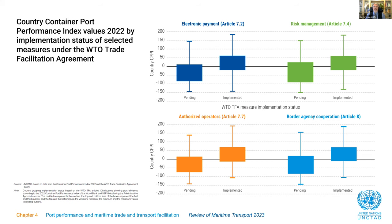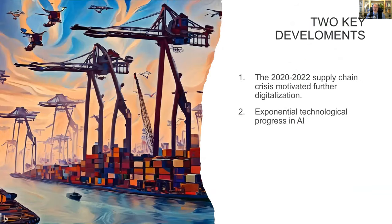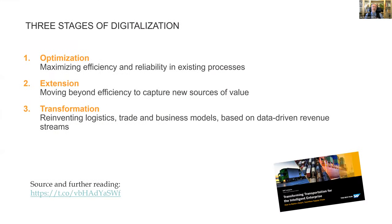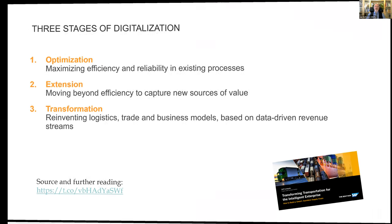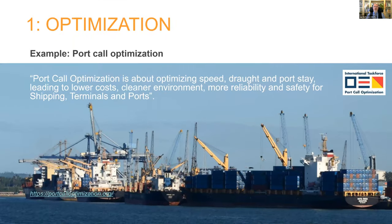On the topic of technologies and trade facilitation: we see two key developments recently. One is that the supply chain crisis motivated a lot of digitalization — more demand for electronic bills of lading, and much more. Then there is exponential technological progress in AI. We see three stages of digitalization: optimization, extension, and transformation. My favorite example of optimization is port call optimization — the ship arrives exactly when the berth is ready.